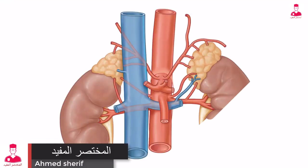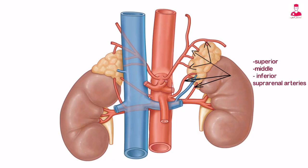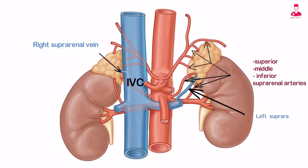The adrenal glands receive arterial blood from the superior, middle, and inferior suprarenal arteries. Drainage of the right gland is via a short suprarenal vein that empties directly into the IVC. The left gland is drained by the left suprarenal vein, which empties into the left renal vein.